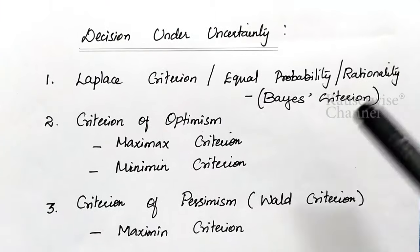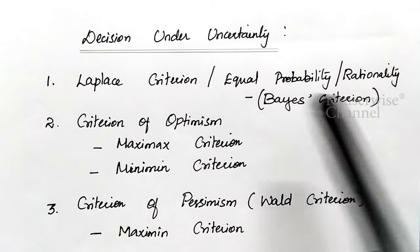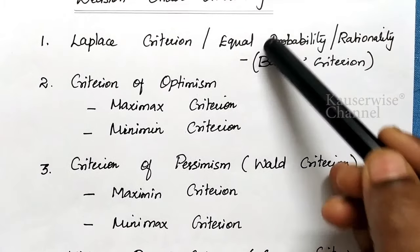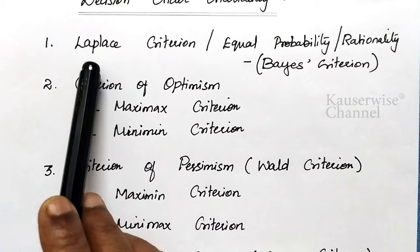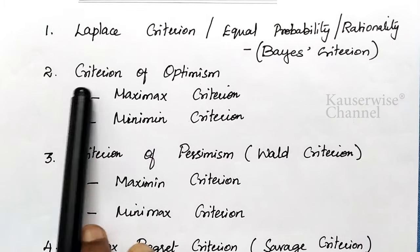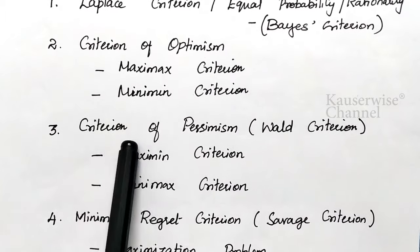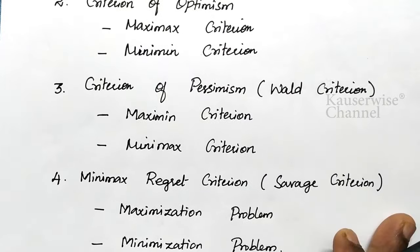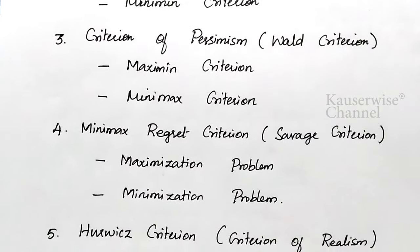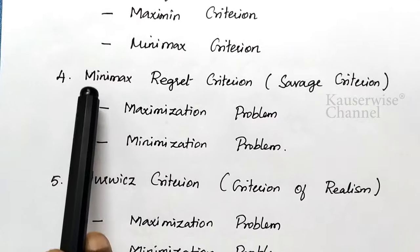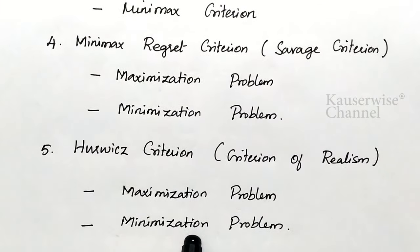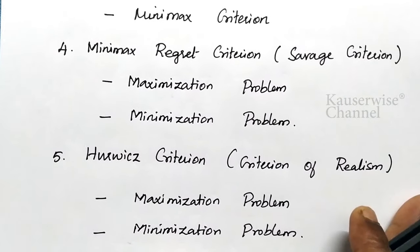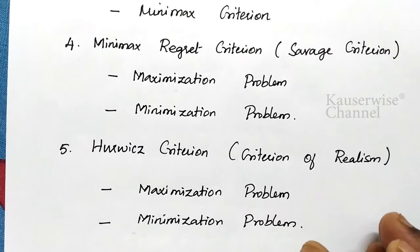Hi, welcome to my channel. This is the continuation video of decision under uncertainty. In the previous video, we discussed the first three methods: the Laplace criterion, the criterion of optimism, and the criterion of pessimism. Links are available in the description box. Please subscribe to this channel and hit the bell icon to get notifications of my new uploads.